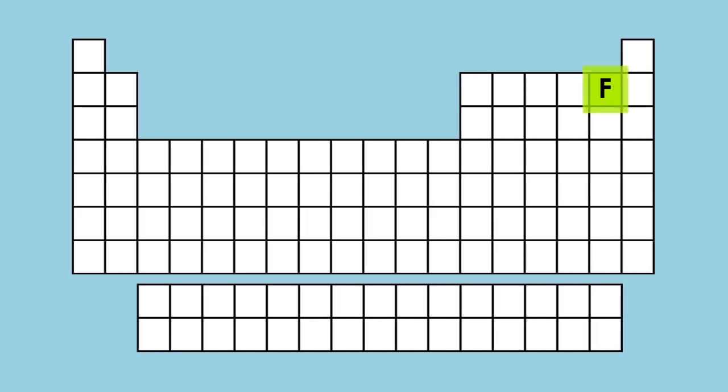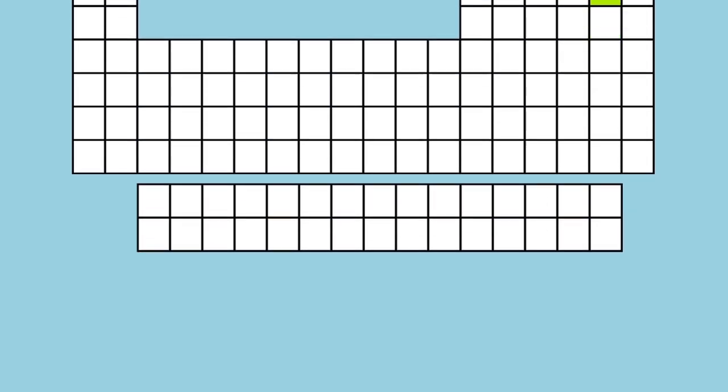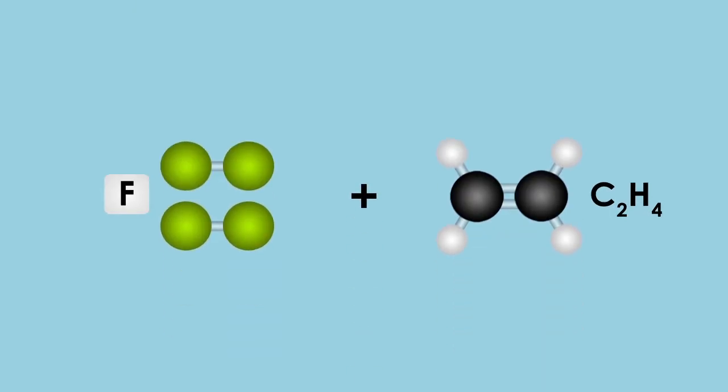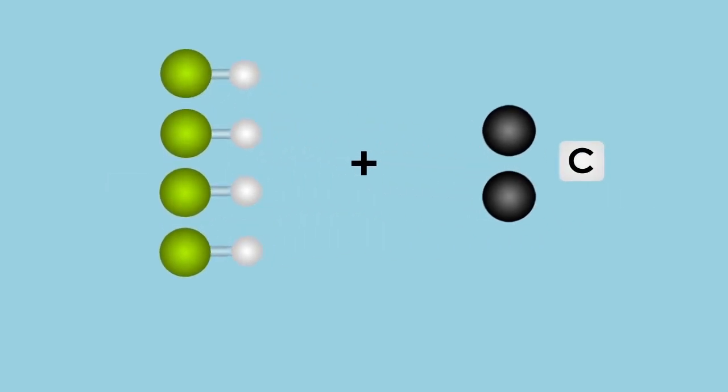Fluorine is at the top of group 7 halogens, and the reaction of fluorine with ethene reacts violently to form carbon and hydrogen fluoride. This is not a particularly useful reaction.